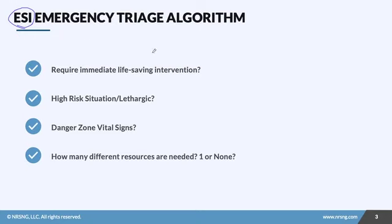Let's talk about ESI, or the Emergency Severity Index. This is an algorithm used by emergency rooms to triage patients — it's used in day-to-day life inside the emergency room. What it does is help us answer: which patients need to be addressed faster? Does the situation require life-saving immediate intervention? Is it a high-risk situation? Is the patient lethargic, confused, or in severe pain or distress? Does the patient have vital signs in dangerous zones — massively elevated or massively low?